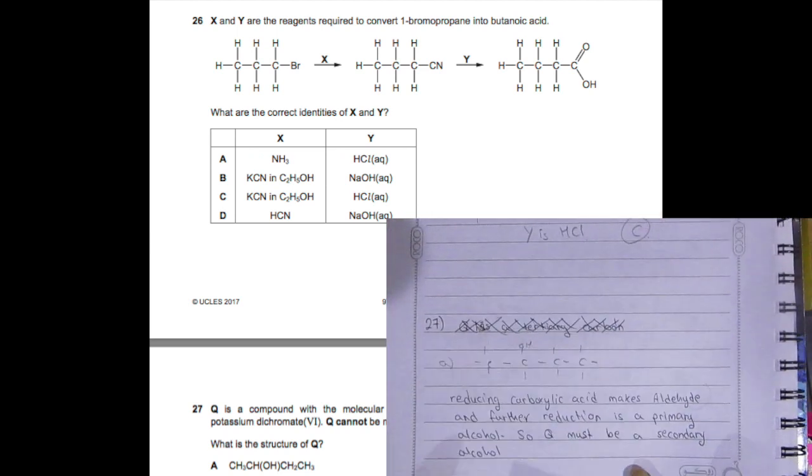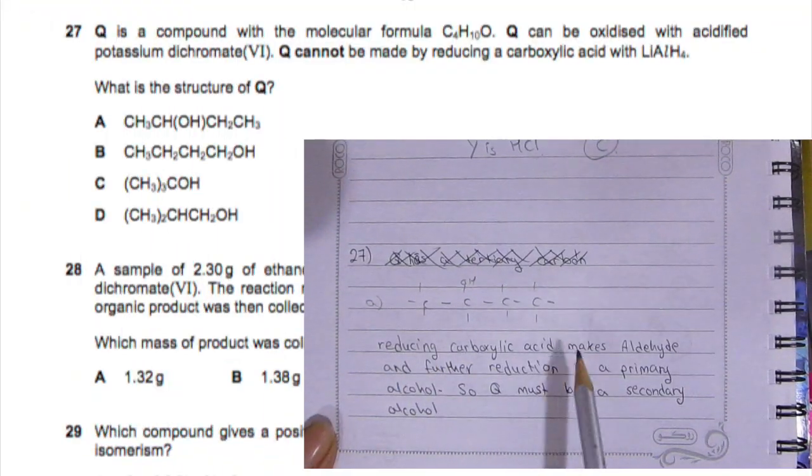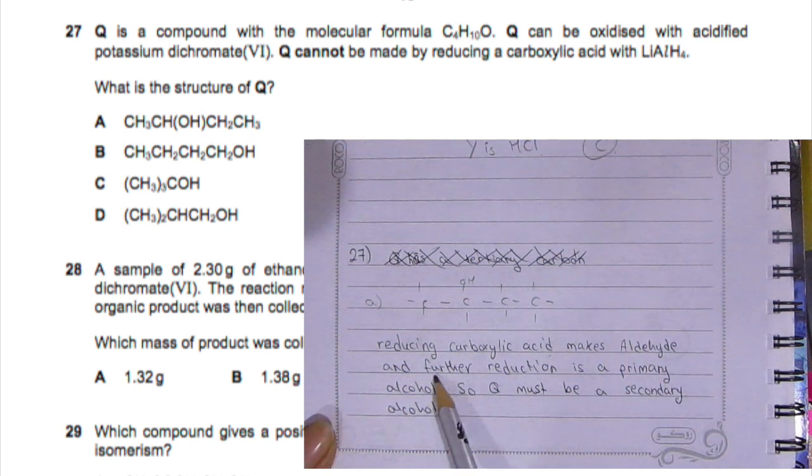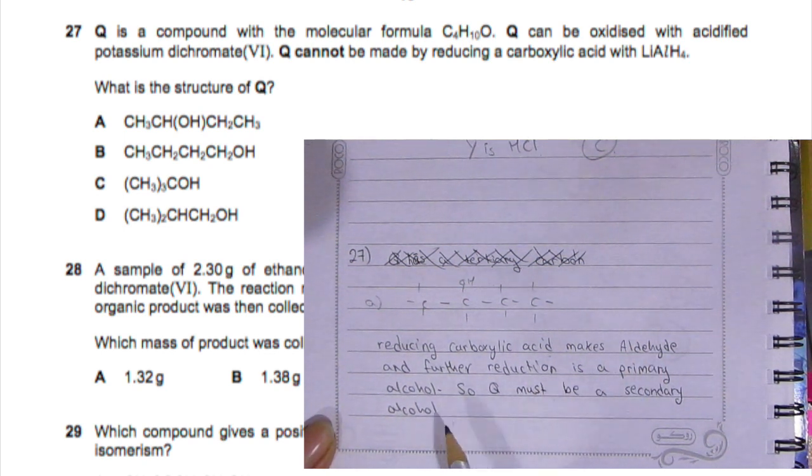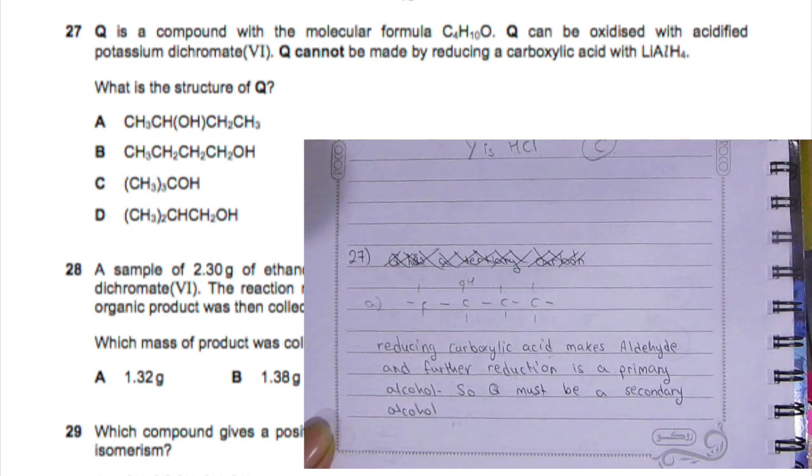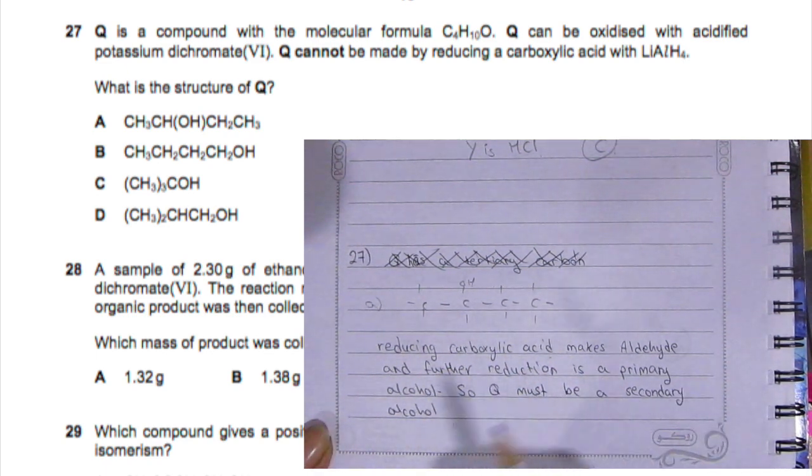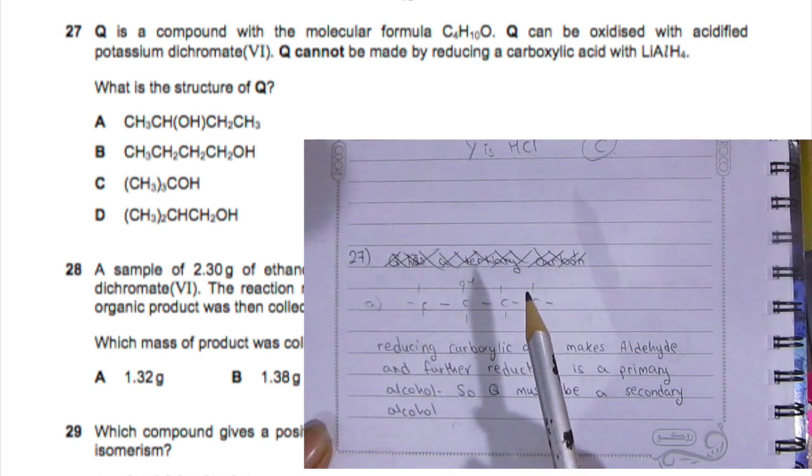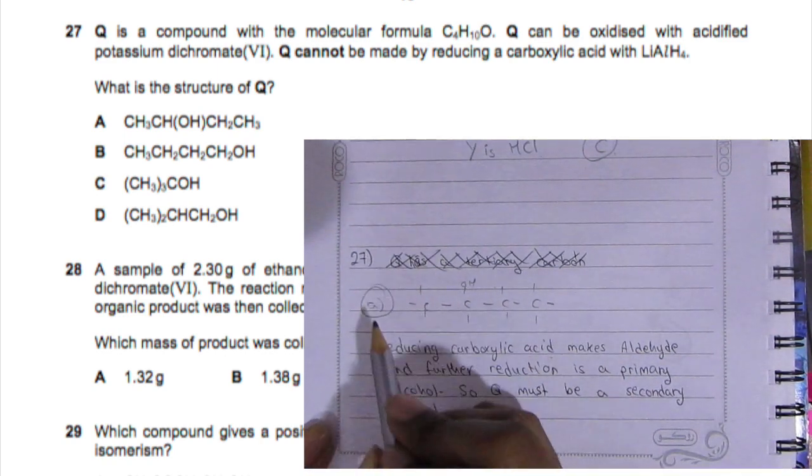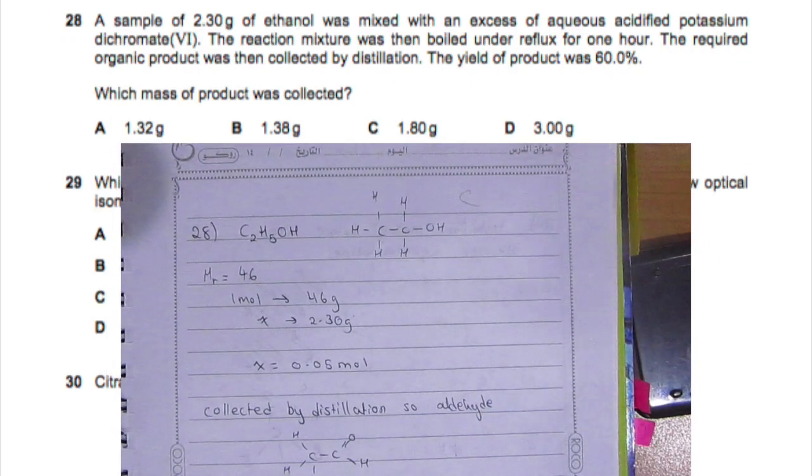Now question 27. Reducing the carboxylic acid makes aldehyde, and further reduction is a primary alcohol. So Q must be a secondary alcohol because it says cannot be made into a carboxylic acid, so then it must be a secondary alcohol. The only one that is a secondary alcohol is A, so A is your answer.